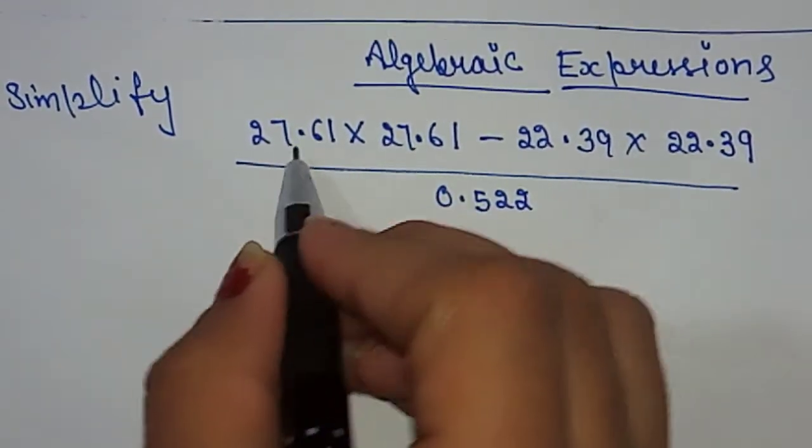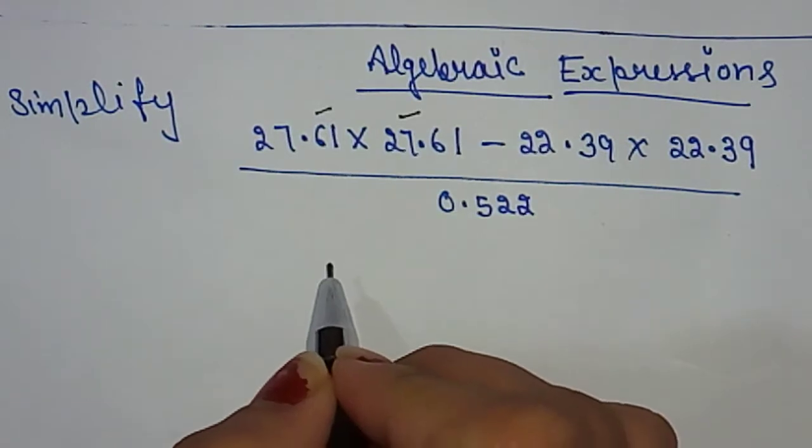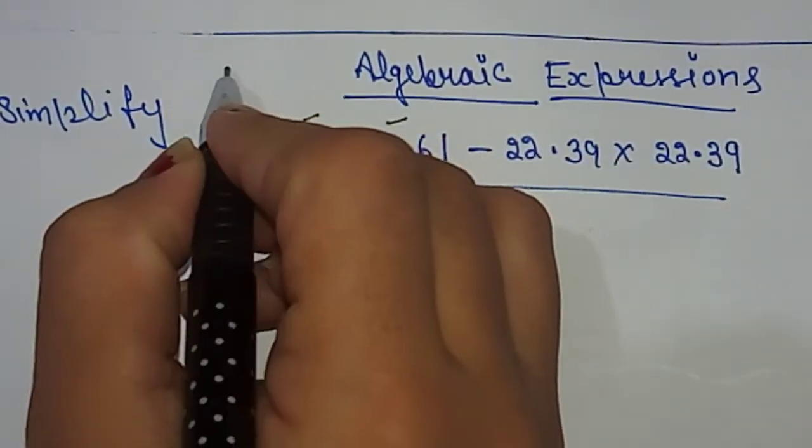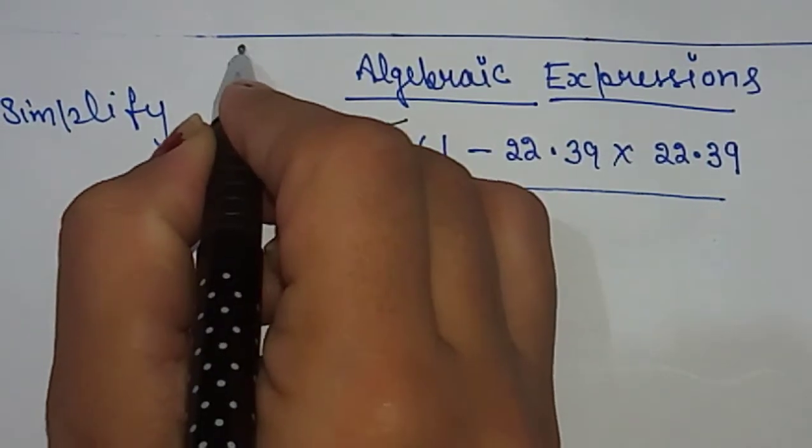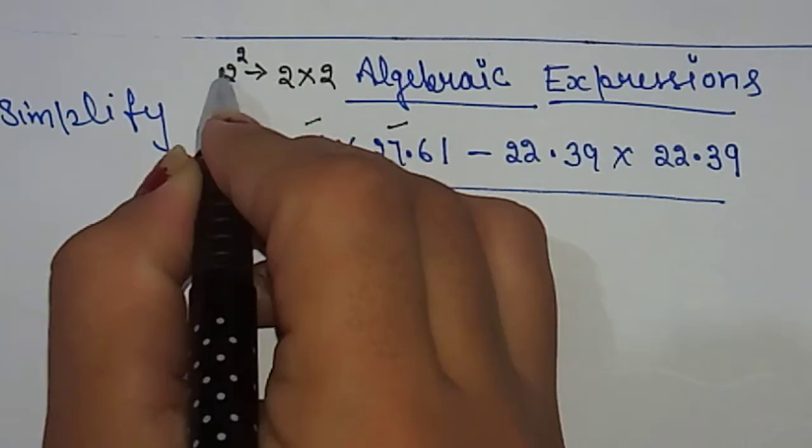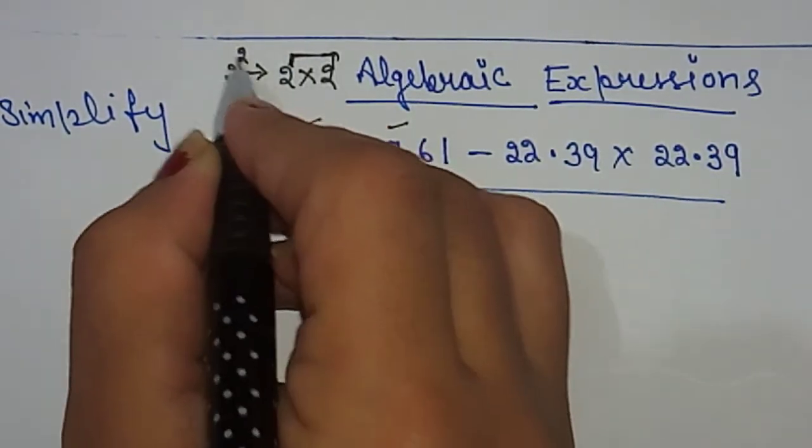Here you have given the same number two times, same number two times. How do you write this? Like if I have given 2 squared, how can we write this number? 2 × 2. It means when you have given the same number two times, it becomes square.